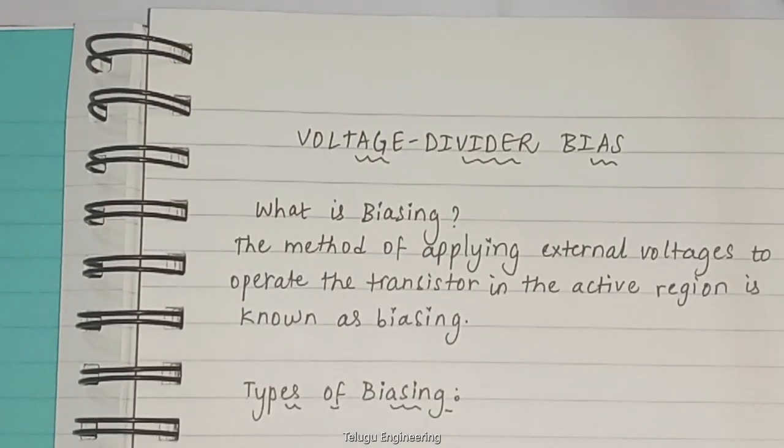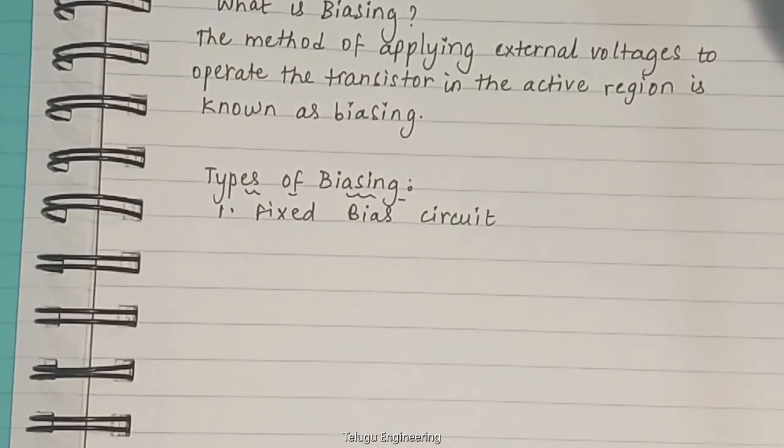Now types of biasing. For accomplishing proper biasing, various biasing circuits are designed as follows. One, fixed bias circuit. Fixed bias is also known as base resistor bias. In this, a common emitter amplifier is biased by connecting the resistor RS across the base and power supply terminals.